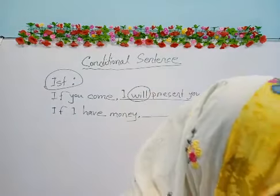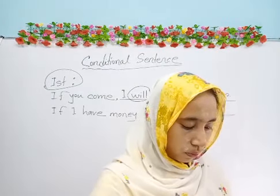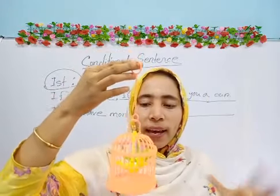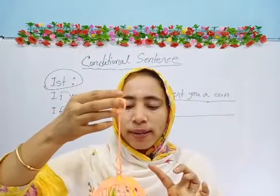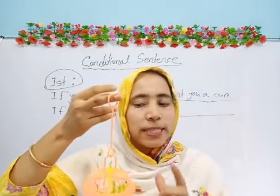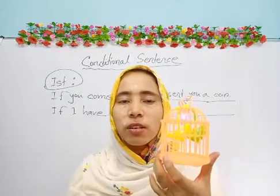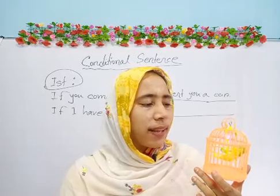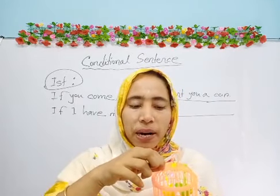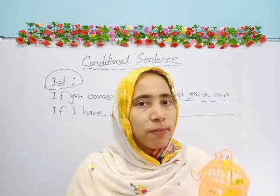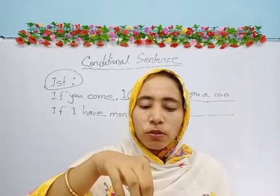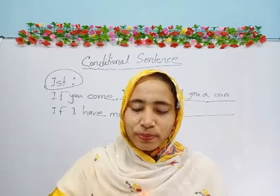Here are two vehicles, and the one at the back wants to overtake. So the first part of our sentence is: if you want to overtake, you will give a signal. After giving the signal, you can overtake. So our first part is: if you want to overtake, then you will give a signal.